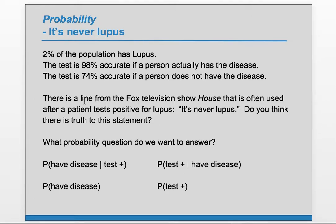We're interested in this: after a patient tests positive for lupus — that is the known information, the given — we want to know what's the likelihood it's actually lupus. So we want this conditional probability: given we know the test came back positive, what's the probability they actually have the disease?